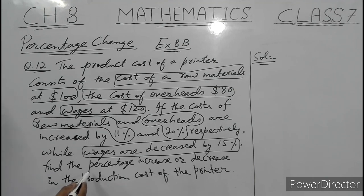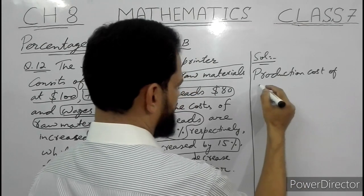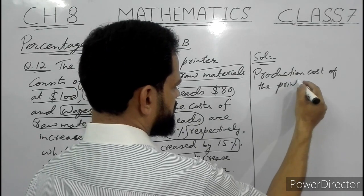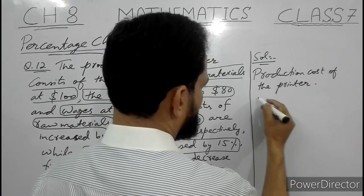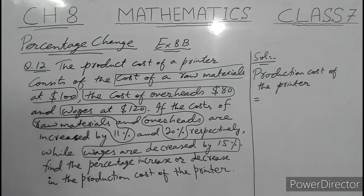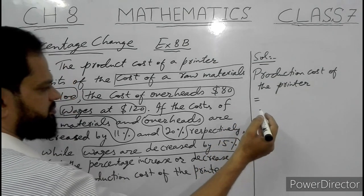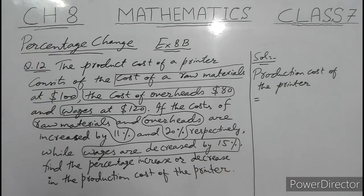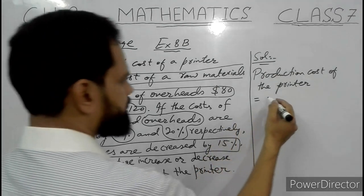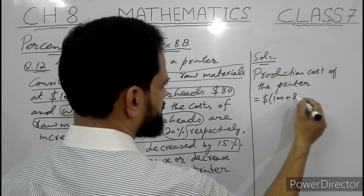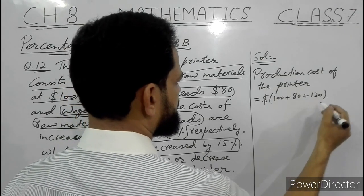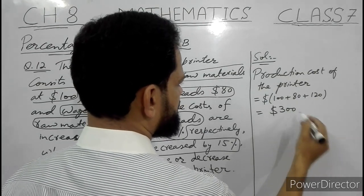What we have to find is the percentage increase or decrease. First of all, I will find the production cost of the printer before any change. Cost of raw materials is $100, cost of overheads is $80, and wages are added to get the production cost. The total production cost of the printer is $300.